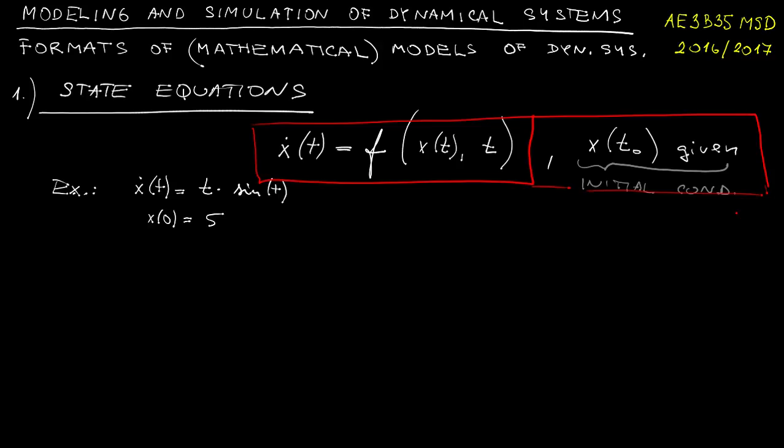Now the reason why this is called a state model is that provided the f function satisfies something called Lipschitz continuity, then specifying the value at the initial time is all that you need to determine x at any other time. And not only that, but what's perhaps equally important is that such solution will be unique.